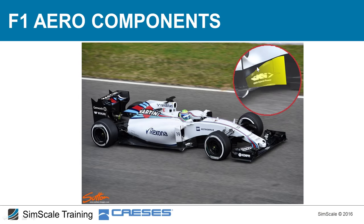Now let's look at the bargeboard — the element highlighted in yellow. The bargeboard scavenges air coming from the front wing and suspension system and smooths it toward the side pod area, because we need maximum clean airflow in that region. This panel straightens and smooths the air to channel it toward the rear of the car.